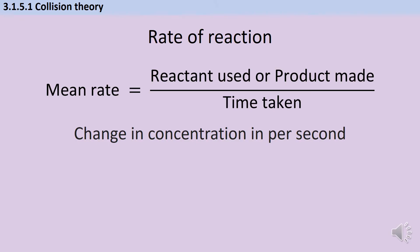At GCSE you would have used a formula that told us that to calculate mean rate of reaction we could look at the amount of reactant used or product made divided by the time taken. And this forms the basis of the definition that we use for A-level.